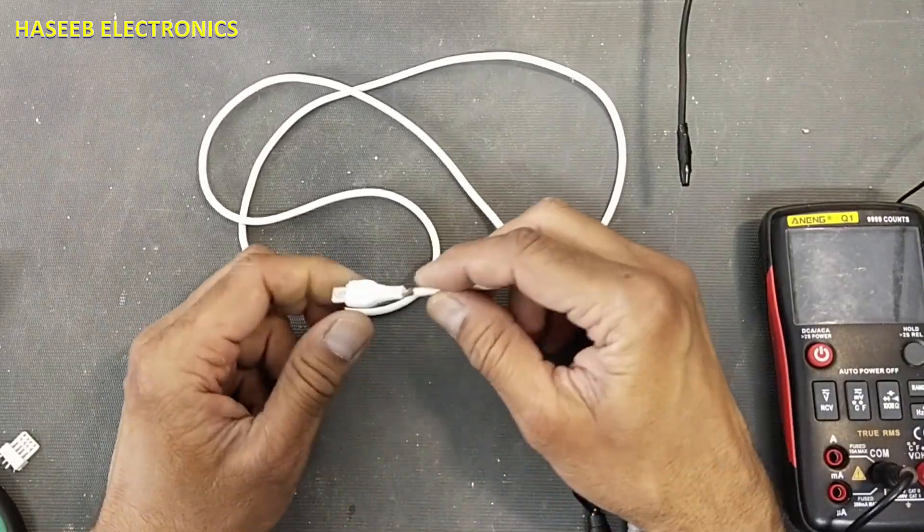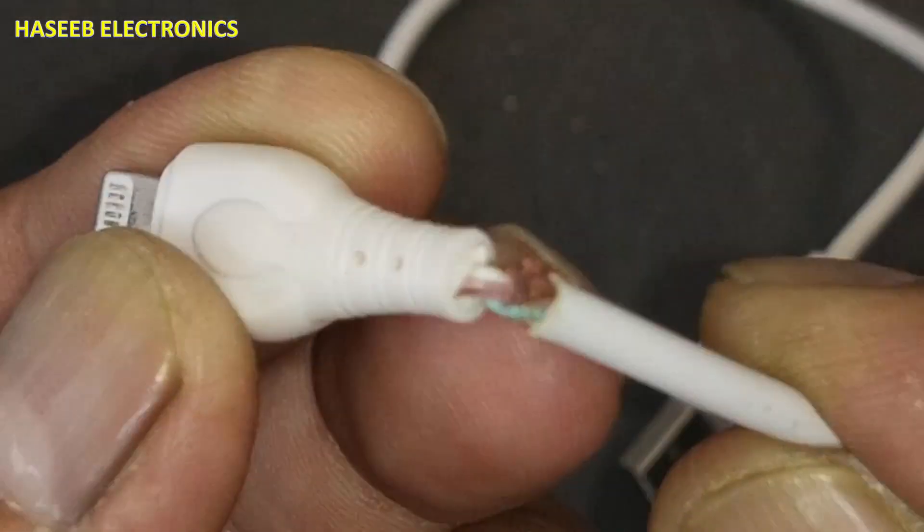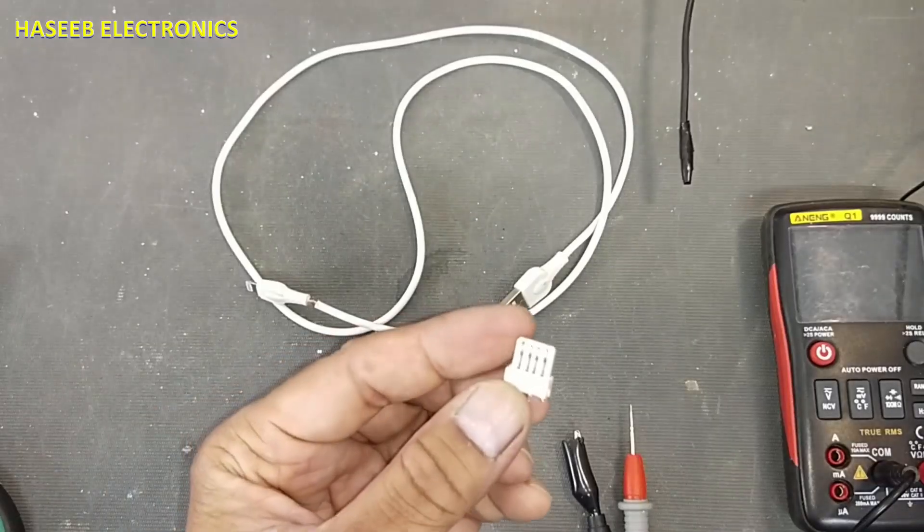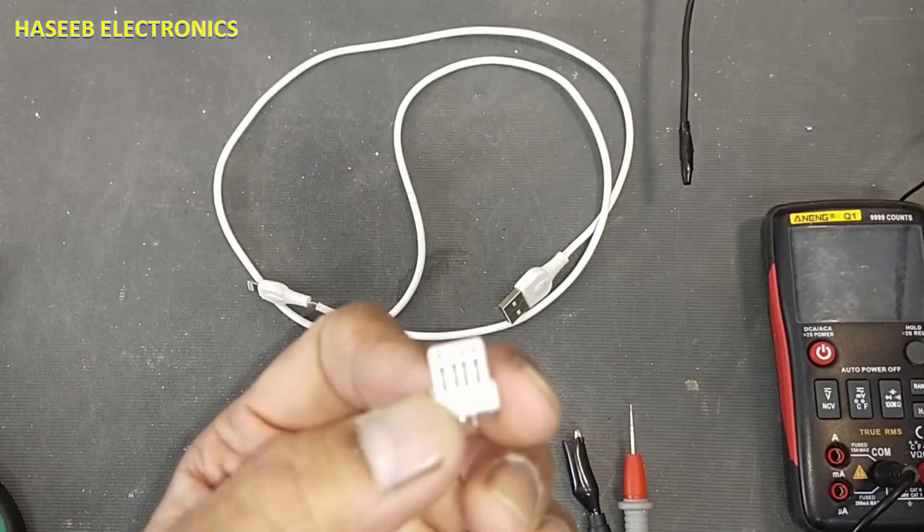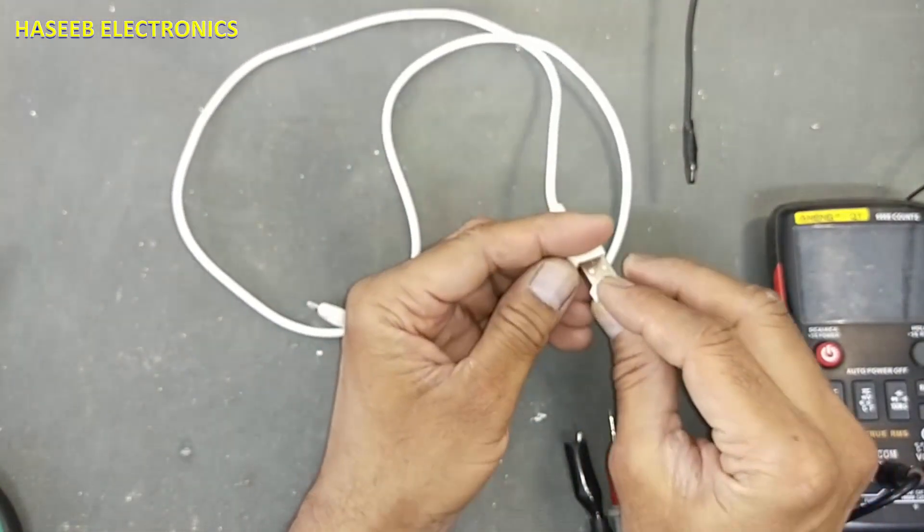Welcome back to my channel. In this session we have this iPhone charging cable. The wires are damaged from this point. I am using this USB charging port, the inner grommet. Install it here.